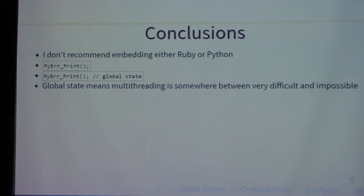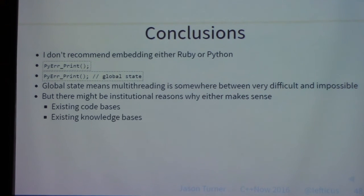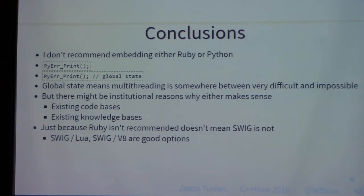Lua and ChaiScript don't have this global state problem. Lua can't handle multiple threads accessing the same state object simultaneously, but you can have multiple Lua states. ChaiScript allows either multiple threads accessing the same ChaiScript object or multiple ChaiScript objects simultaneously. That said, there may be institutional reasons to use Ruby, Python, or other languages not designed for embedding — existing code, existing knowledge base, or working with what your team knows. And just because Ruby isn't ideal doesn't mean SWIG isn't — SWIG supports a vast number of languages including Lua and V8.